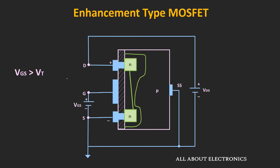When we apply Vds, electrons in the channel get attracted towards the positive terminal, establishing current flow. The conventional current flows from the drain terminal towards the source terminal. However, the width of the channel is reduced towards the drain side, because the positive voltage at the drain terminal makes that PN junction more reverse biased, increasing the depletion region width and reducing the effective channel width towards the drain terminal.